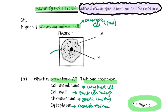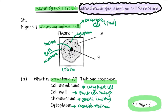Let's do a quick recap on the labels. An animal cell has a cell membrane, a nucleus, cytoplasm, and it can also have ribosomes and mitochondria.